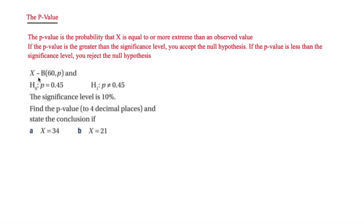This question says x is binomially distributed B(60, p), with p = 0.45 in the null hypothesis. The alternative hypothesis is that p is not equal to 0.45. This is important because it is a two-tailed test. The significance level is 10%, but because it's both sides, that becomes 5% for one side and 5% for the other side — that's why we halve the significance level.